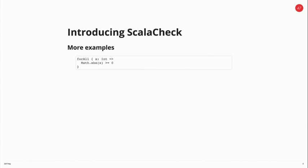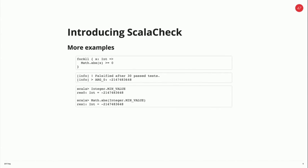Here's another example. We're using forAll again, and this time we're passing in an integer. Absolute function — whatever value ScalaCheck gives us, if we call the absolute function, it should be greater than or equal to zero. But no, this fails. Does anybody know what this number is? There's one more negative value in the integer type, so negating that just gives the same value. So right away here, this is what I meant by there's a conversation — ScalaCheck said, look, there's a problem with what you've written here.